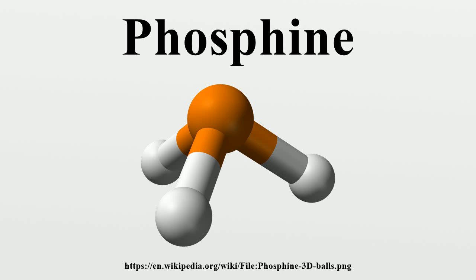History: Philippe Gengembre, a student of Lavoisier, first obtained phosphine in 1783 by heating phosphorus in an aqueous solution of potash. Perhaps because of its strong association with elemental phosphorus, phosphine was once regarded as a gaseous form of the element. But Lavoisier recognized it as a combination of phosphorus with hydrogen and described it as phosphore-hydrogène.